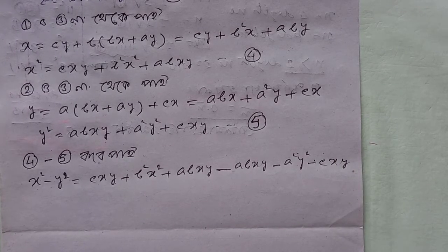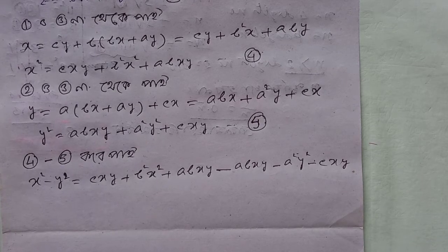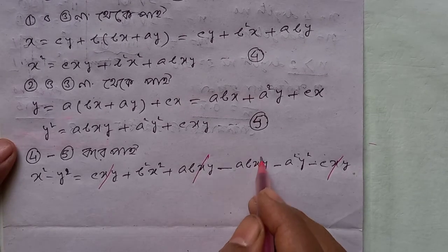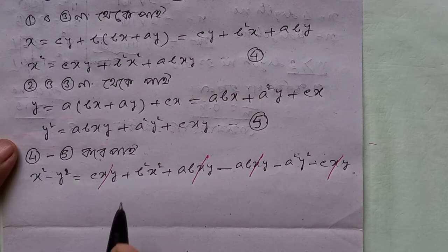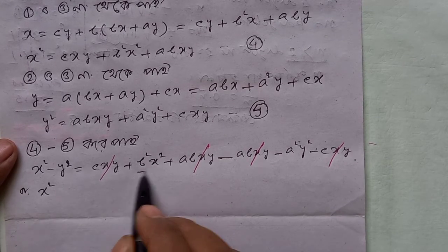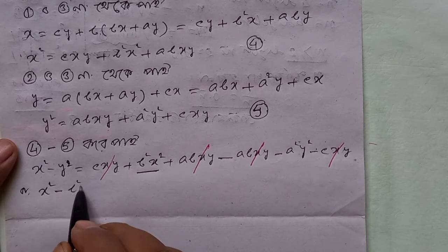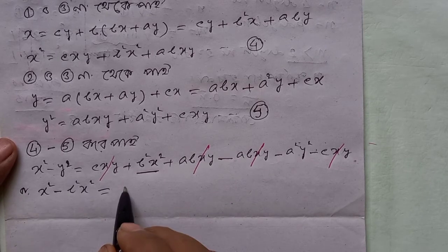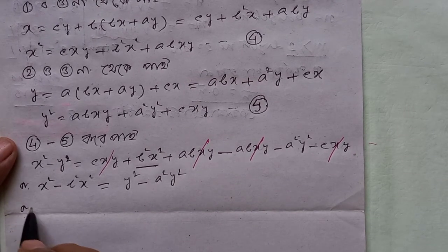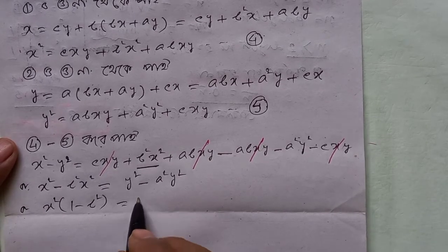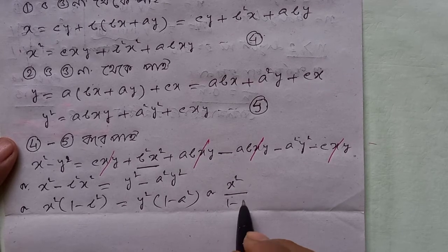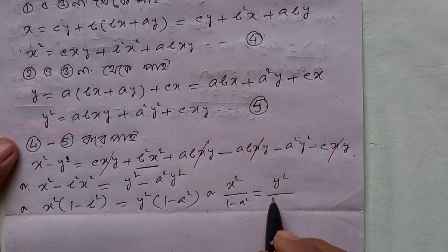Now writing it out carefully, we get b square x square equals to y square minus a square y square. So on the left side, x square is taken common: x square into 1 minus b square equals to y square into 1 minus a square.